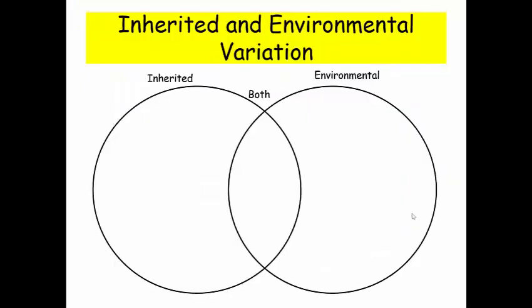So what I'd like you to do is copy this Venn diagram into your book and we're going to classify some types of variation as inherited, environmental or both. So start by copying this down, pause the video for a minute if you need to.